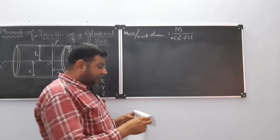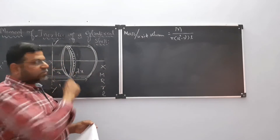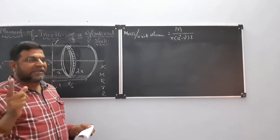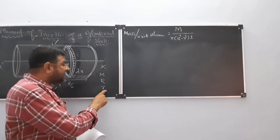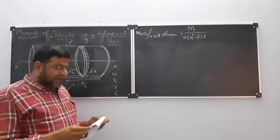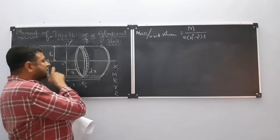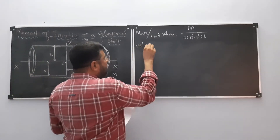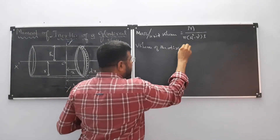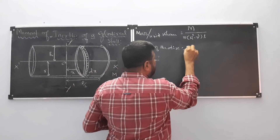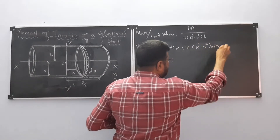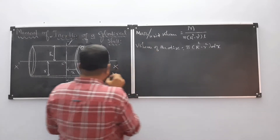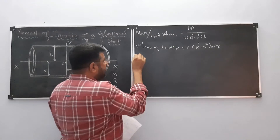Imagine the cylinder to be made up of a large number of annular discs. This is one annular disc at a distance x from the center and of thickness dx. It has two radii — the internal radius small r and the external radius capital R. The volume of this small disc is equal to π(R² − r²)dx, where dx is the thickness.